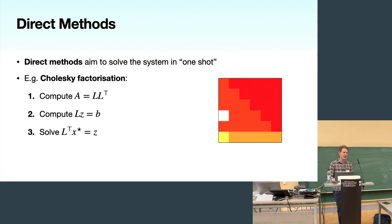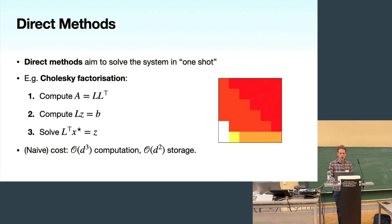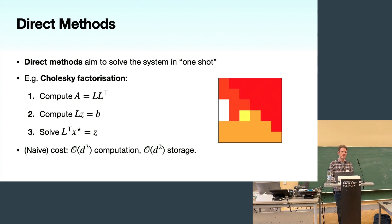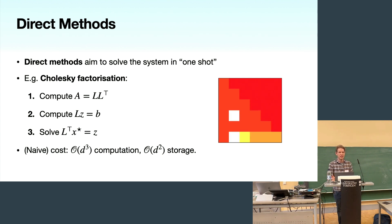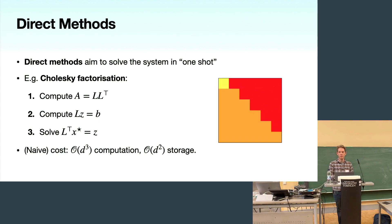This requires A to be symmetric positive definite. In terms of cost, there are two deficiencies that iterative methods aim to address. First, computational time: looking at the Cholesky access pattern, there are clearly three nested for loops, giving an O(D³) computation. If you stop the factorization early, the error from using this unfinished factorization can be arbitrarily large, which is bad.